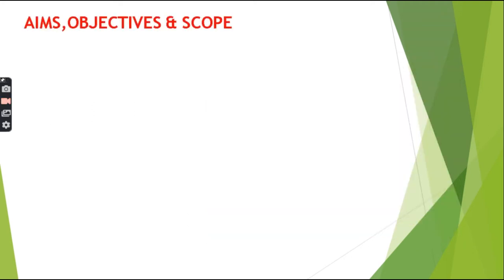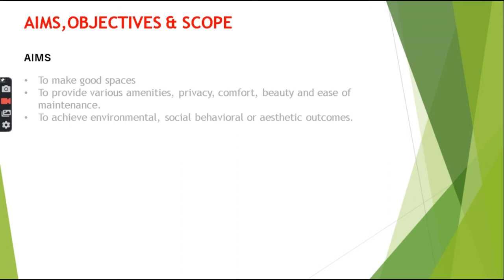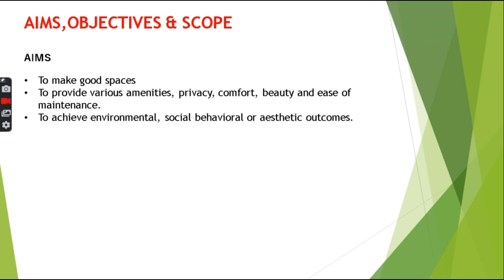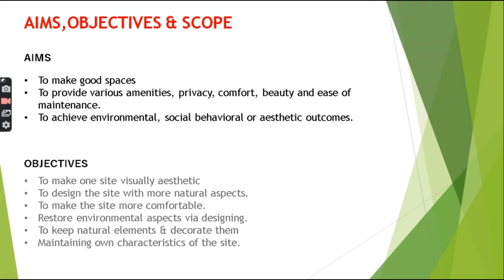Moving on to aims, objectives and scope of Landscape Architecture. What are the aims of Landscape Architecture? It includes to make good spaces, to provide various amenities, privacy, comfort, beauty and ease of maintenance, and also to achieve environmental, social, behavioural or aesthetic outcomes. The objectives include to make one site visually aesthetic, to design the site with more natural aspects, to make the site more comfortable, restore environmental aspects by designing, to keep natural elements and decorate them, and maintaining all characteristics of the site.